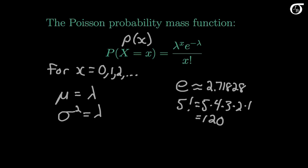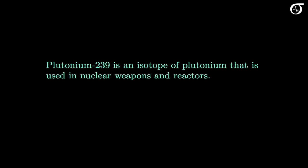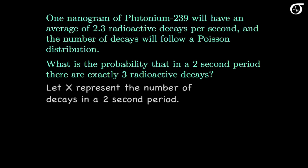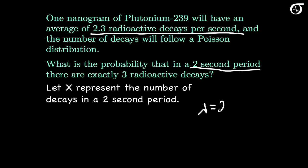Let's look at an example. Plutonium-239 is an isotope of plutonium used in nuclear weapons and reactors. One nanogram, or one billionth of a gram, of plutonium-239 will have an average of 2.3 radioactive decays per second, and the number of decays in a given period will follow, to a very close approximation, a Poisson distribution. We'd like to know the probability that in a randomly selected 2-second period there are exactly 3 radioactive decays. We let x represent the number of decays in a 2-second period. Since there is an average of 2.3 decays per second over a 2-second period, lambda equals 2.3 times 2, which is 4.6.